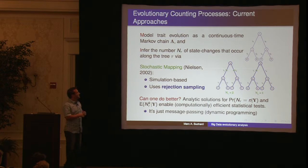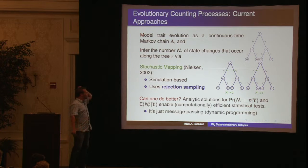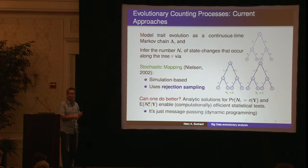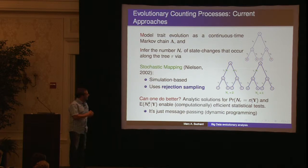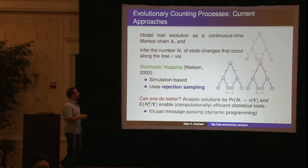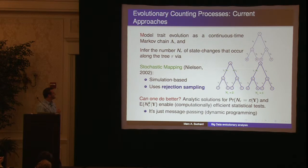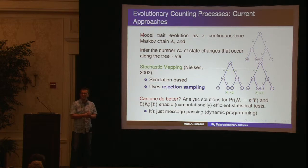They said since it was impossible, they were going to use rejection sampling. This paper has over a thousand Google citations — I don't know of any other in phylogenetics in terms of a theoretical paper that has so many. It's really well believed that you need to use rejection sampling for this type of problem. But the real take-home message is: no, you don't. You just have to think about message passing.